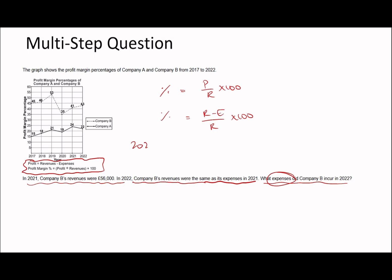It's likely that's how we're going to work out our expenses. For 2022, let's set up the equation. The percentage for company B was 43. So 43 equals the revenue — which it says is the same as the expenses in 2021, something we'll have to work out — minus the expenses we're trying to find, divided by revenue, times 100.